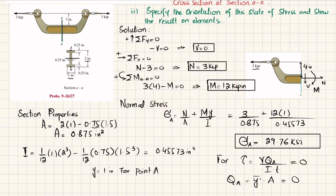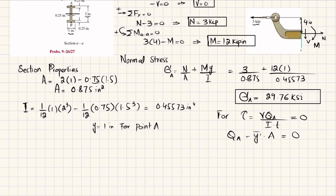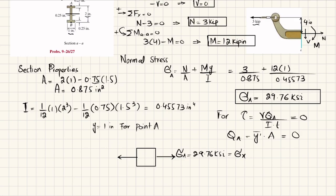The state of stress at point A can be represented on an element with only the normal stress in the horizontal direction: σ_x = σ_A = 29.76 ksi. There is no stress in the y-direction, so σ_y = 0, and there is no shear stress, τ_xy = 0.